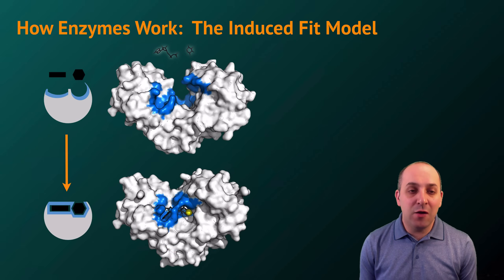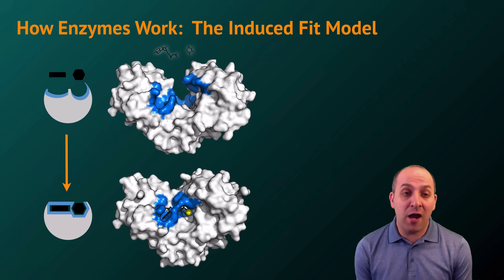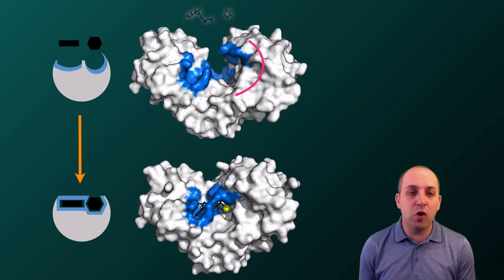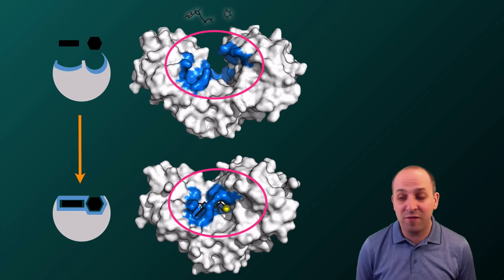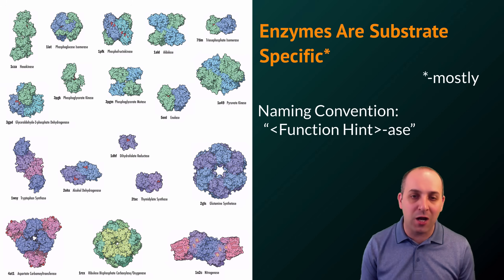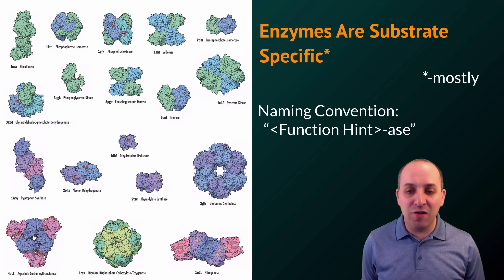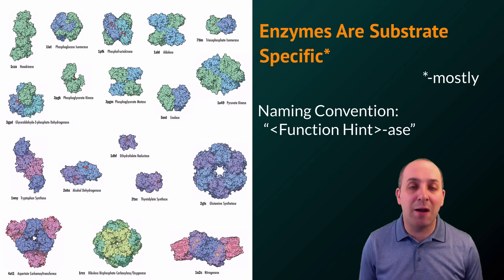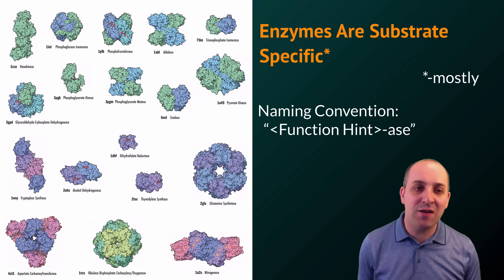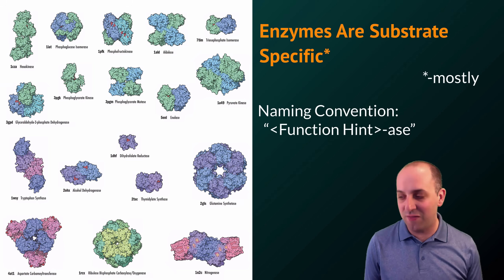Here is the conformation of the hexokinase enzyme prior to substrate binding and after the substrate binds. If you look at the shape of the active site in both instances, you'll notice small but noticeable changes have occurred. Enzymes are substrate-specific — each enzyme works on only one molecule for the most part, with a couple of exceptions. We generally name enzymes using a convention where the first part of the name references the substrate, then ending the name with the suffix -ase. Here are a variety of different enzymes that all use this convention.